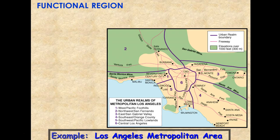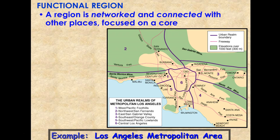By contrast, functional regions are regions that are networked or connected with other places and focused around a core. Last time we talked about the concept of core-periphery relationships — in effect, this functional region connects the core with its periphery, most often by a network of roads or railroad lines, maybe communication lines. Rather than having distinct boundaries, these networked functional regions tend to have a spider configuration, with connectivity between the core area — here represented by central Los Angeles — and outlying areas. Generally speaking, these functional regions will be urban areas.